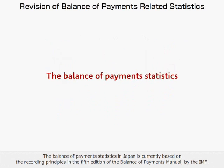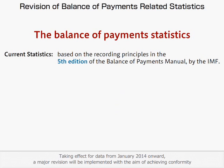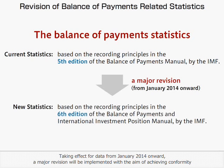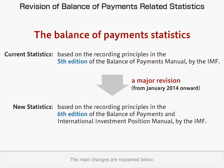The Balance of Payments Statistics in Japan is currently based on the recording principles in the 5th edition of the Balance of Payments Manual by the IMF. Taking effect for data from January 2014 onward, a major revision will be implemented with the aim of achieving conformity with the 6th edition of the Balance of Payments and International Investment Position Manual by the IMF. The main changes are explained below.